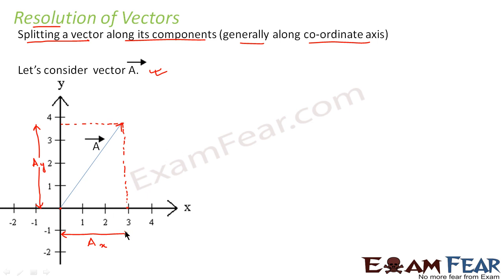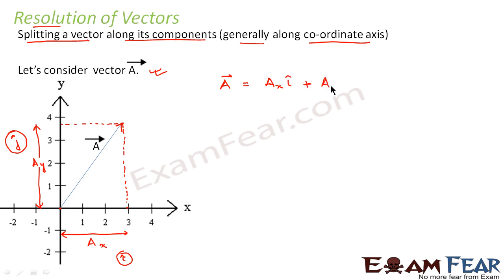The unit vector along the x-axis is denoted by î (i-cap), and the unit vector along the y-axis is denoted by ĵ (j-cap). So vector a is nothing but the magnitude of a along the x-axis times î, plus the magnitude of a along the y-axis times ĵ. Any scalar quantity multiplied by a unit vector gives a vector, and two vectors when added give a vector.